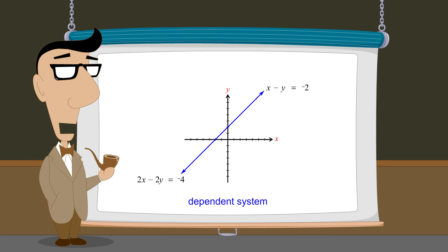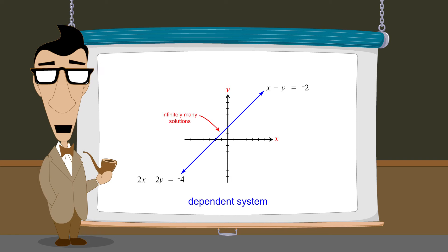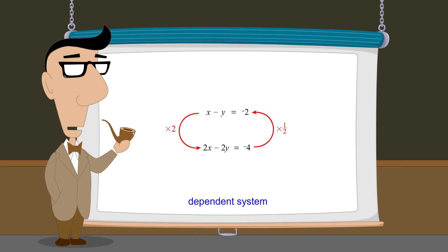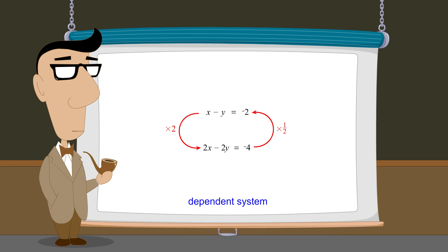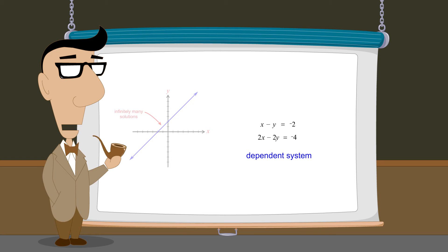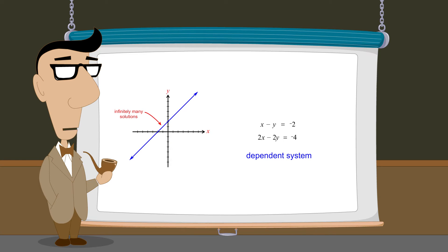We also showed that if a system of two equations is dependent, it will consist of two equations that describe the same line. Since the two graphs intersect at every point, the system will have infinitely many solutions. Since the two equations describe the same line, the equations must be either identical or multiples of each other. This makes it easy to tell if a system of two equations is dependent: if the equations are multiples of each other, the system is dependent and must have infinitely many solutions. This is true of any dependent system of two equations regardless of the number of variables.